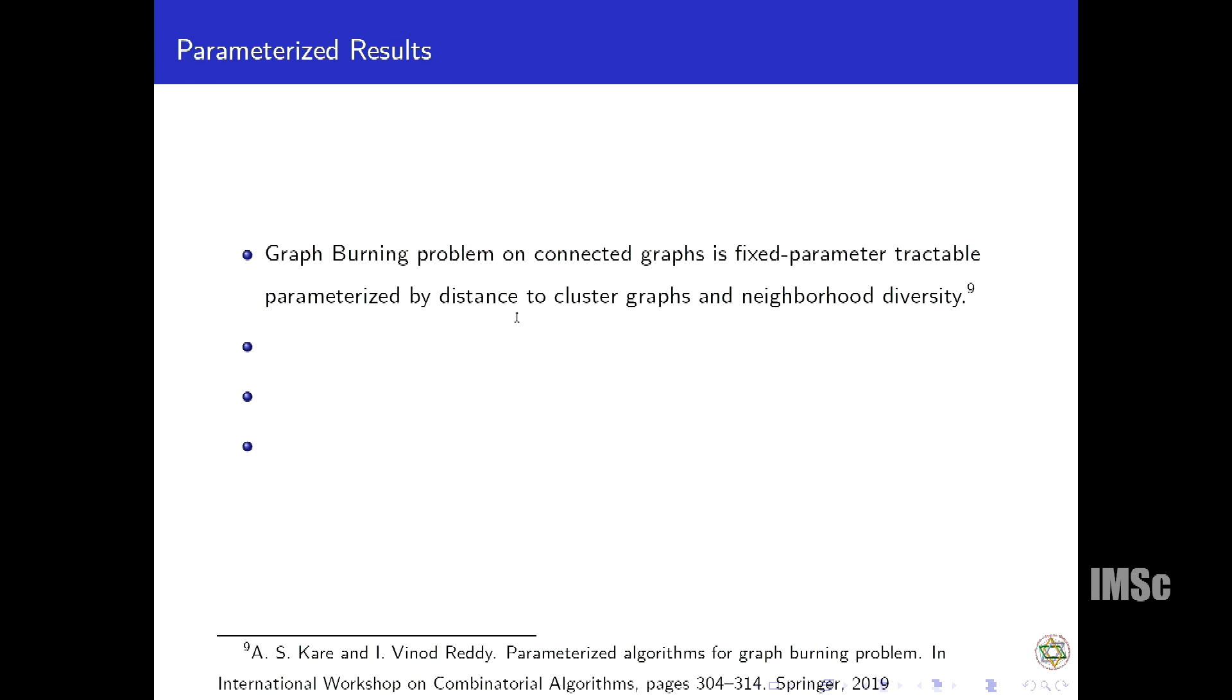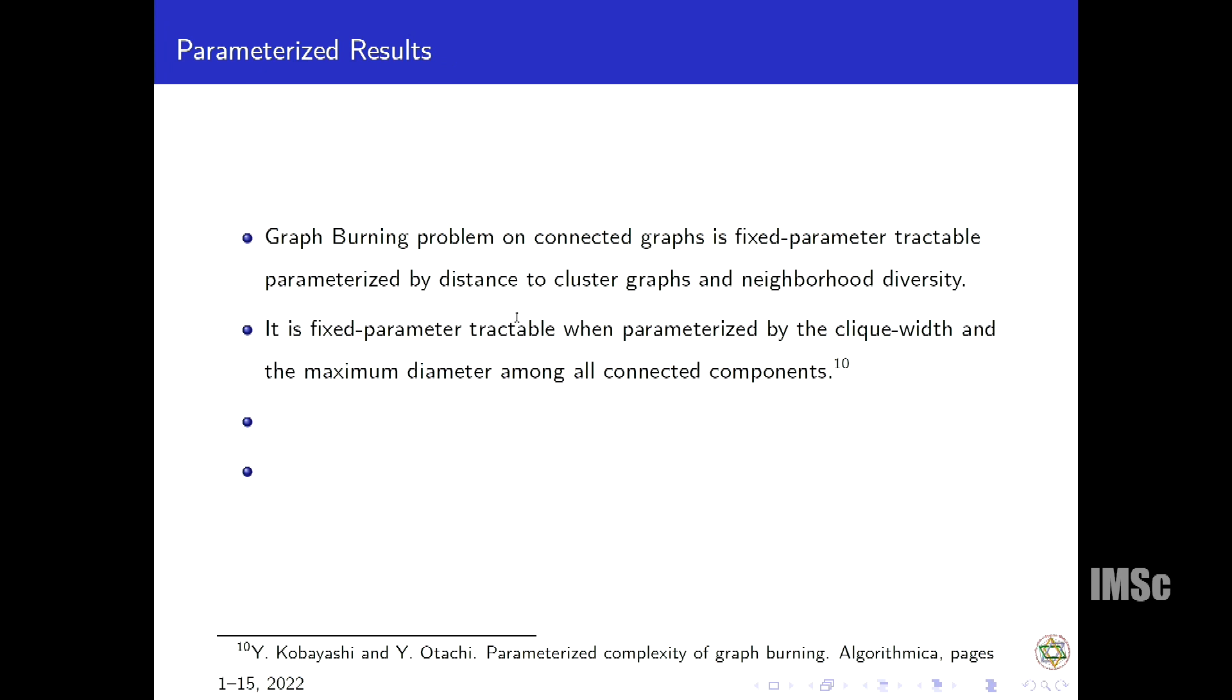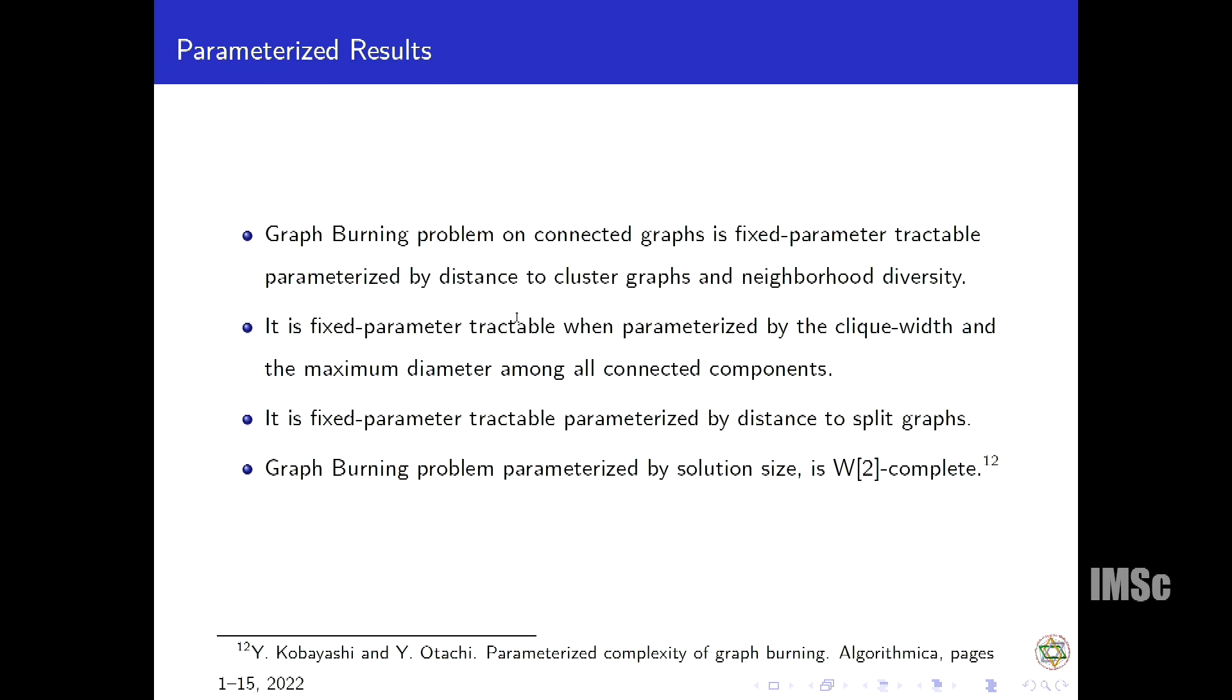Let us look at the parameterized results. If we take a parameter as distance to cluster graph and neighborhood diversity, we can give a fixed parameter tractable algorithm. If we take the parameter as clique width and maximum diameter among all connected components, there is also an FPT algorithm. There is also an FPT algorithm when parameterized by distance to split graph. But if we take the parameter as the solution size, the burning number, then there is no fixed parameter tractable. That's why we call it W2-complete.